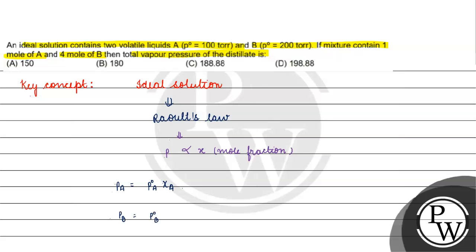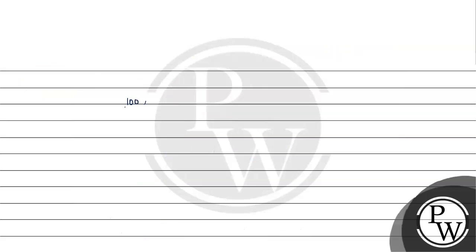Similarly, PB = P⁰B × χB. By Dalton's Law of partial pressures, PA + PB equals total pressure P_total = P⁰A·χA + P⁰B·χB, where P⁰A is the vapor pressure of pure solvent A, χA is its mole fraction, P⁰B is the vapor pressure of pure solvent B, and χB is the mole fraction of B. Here P⁰A = 100 torr.